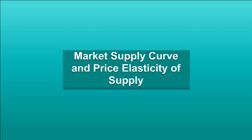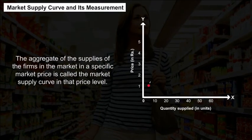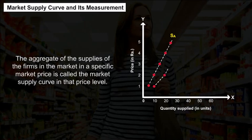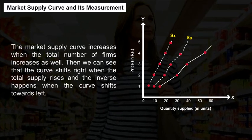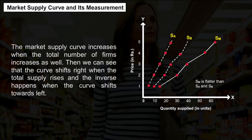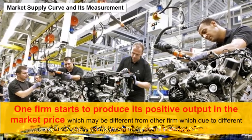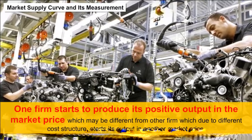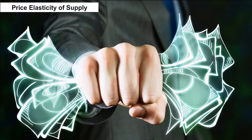Market Supply Curve and Its Measurement. The aggregate of the supplies of the firms in the market at a specific market price is called the market supply curve at that price level. The market supply curve increases when the total number of firms increases. The curve shifts right when total supply rises and shifts left when total supply falls. Firms start positive output at different market prices due to different cost structures, and the total supply curve is a horizontal summation projected to the right.